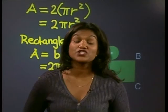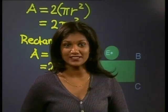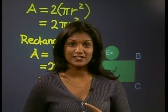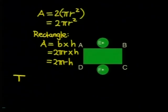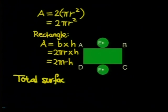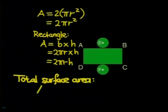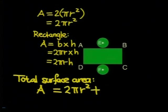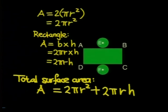Now we can work out the total surface area for our cylinder. All we need to do is add the area for our two circles to the area of our rectangle. So the total surface area is calculated by: A equals 2 times pi times radius squared, plus 2 times pi times radius times the height.